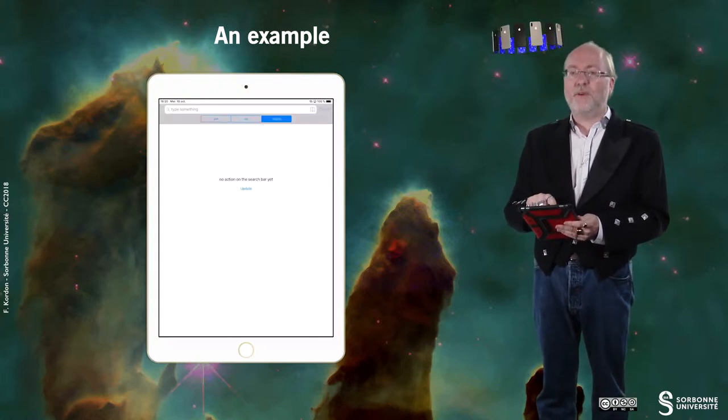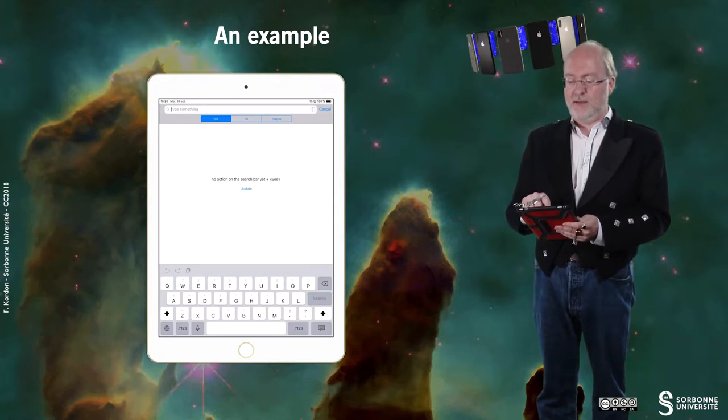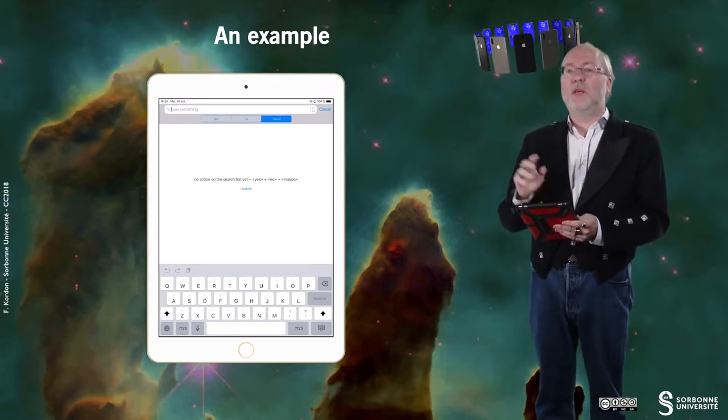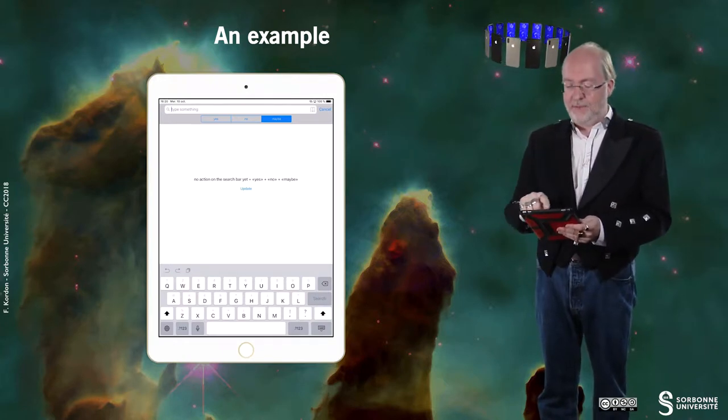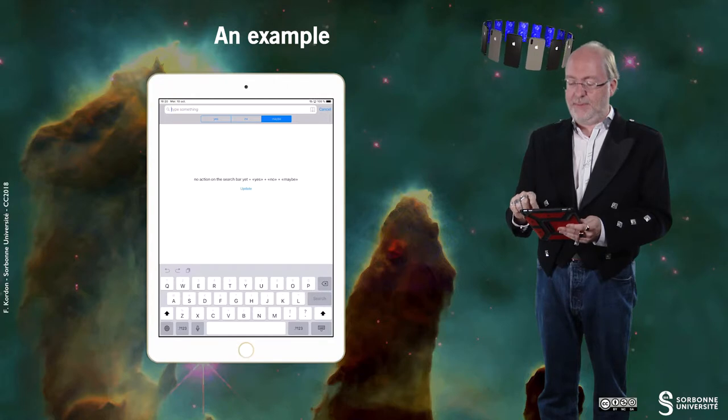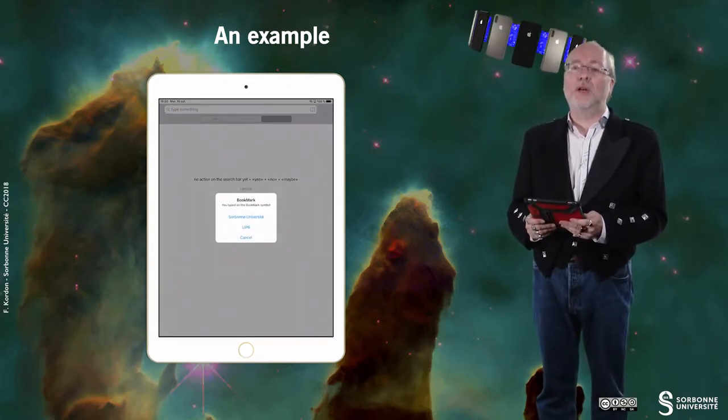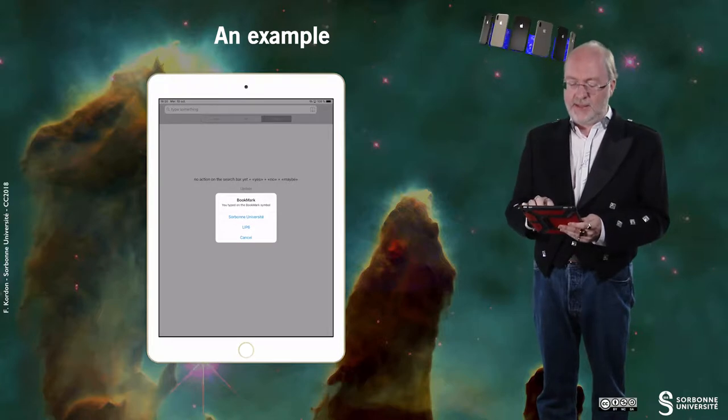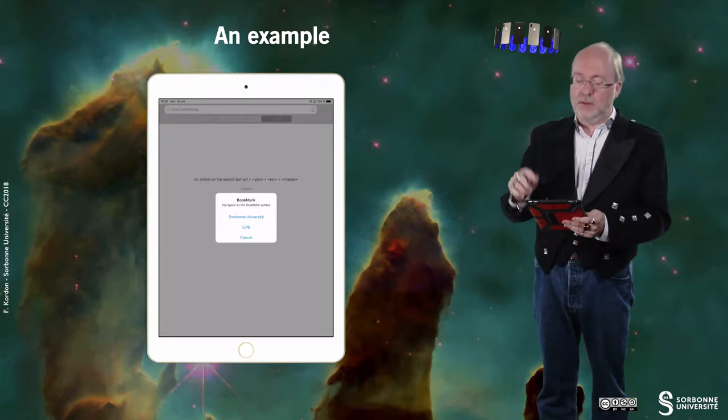If I tap on yes or no or maybe, you see that I affect the label. If I tap on the bookmark icon, then it states that I have a sort of bookmark I can look for. It's artificial.